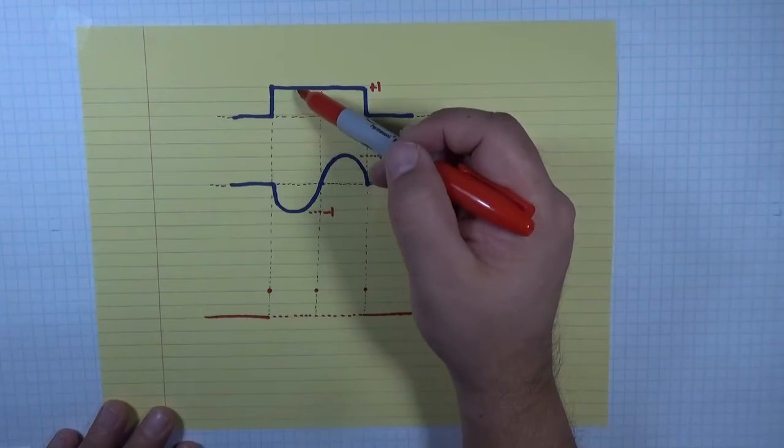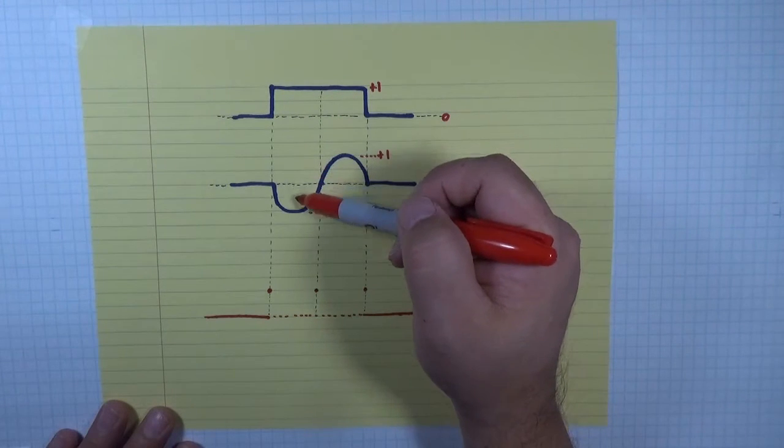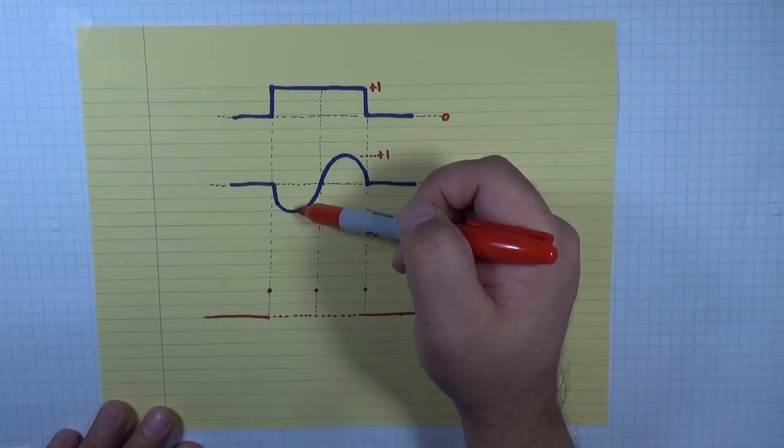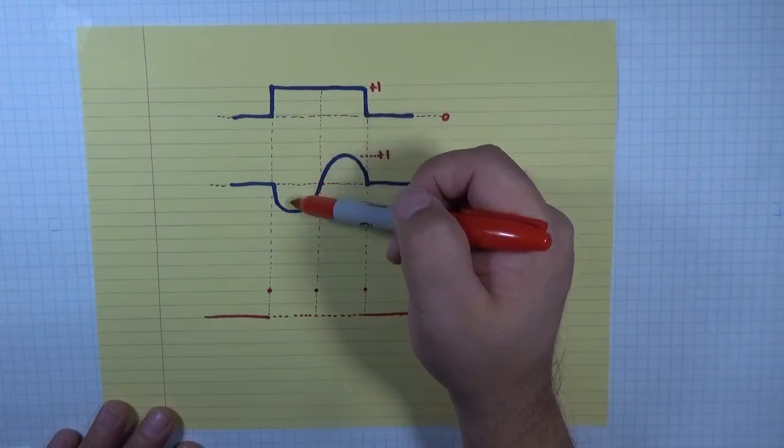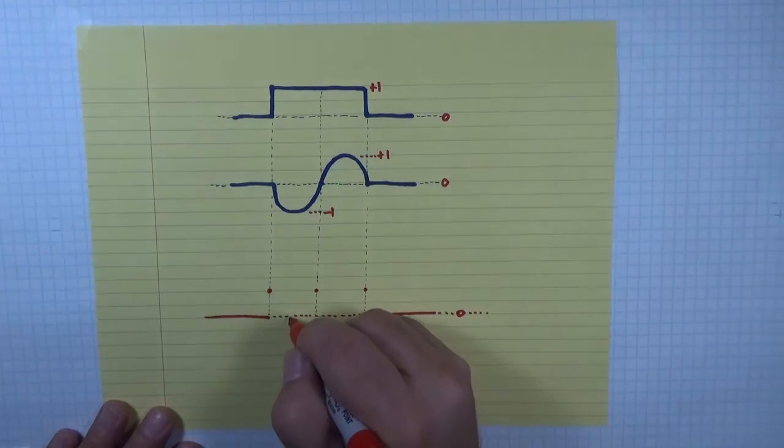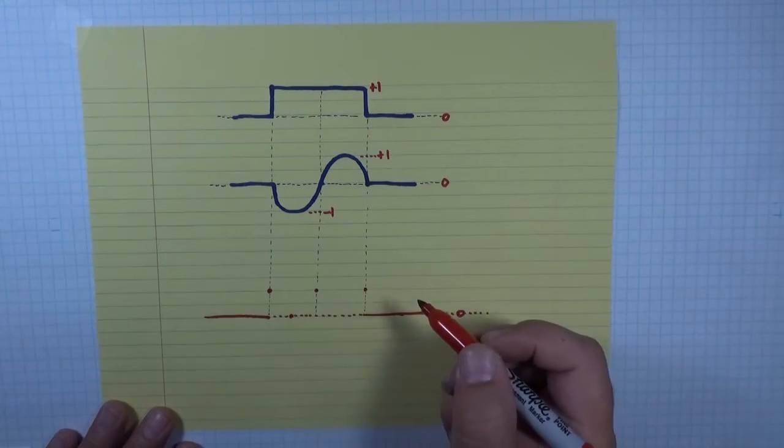So halfway between, this one is plus one, and this one is minus one. So one minus one is zero. So halfway in between, I have to get back to zero.